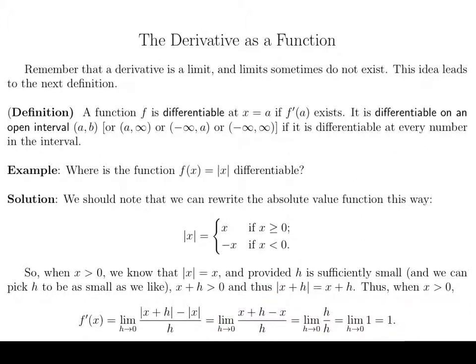Now we cancel out the x's and get just this fraction. The h's cancel out — and that's what we want, we can't have that h in the bottom. We just get a limit of one. One of our limit laws says that if we take the limit of just a number, the answer is just that number. So that's the derivative when x is positive.